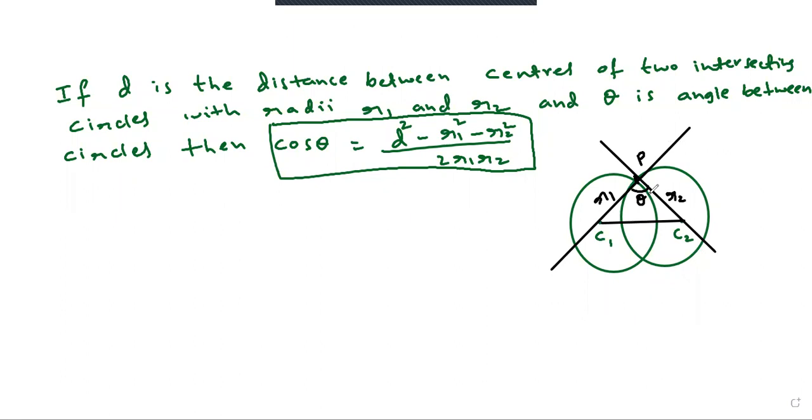If it is theta, then cos theta is equal to d square minus r1 square minus r2 square by 2r1 times r2. Very important formula.